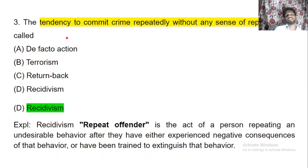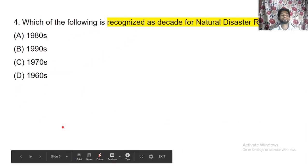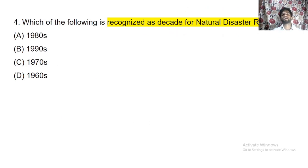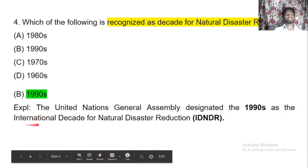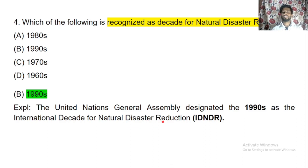Next question: which decade is recognized for natural disaster reduction? The United Nations General Assembly designated the 1990s as the International Decade for Natural Disaster Reduction, known as IDNDR.